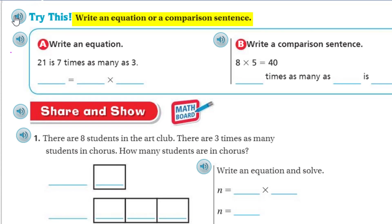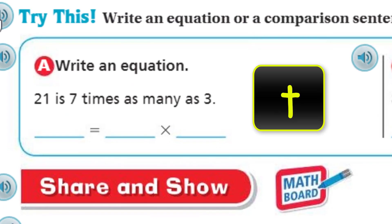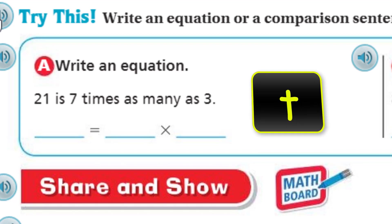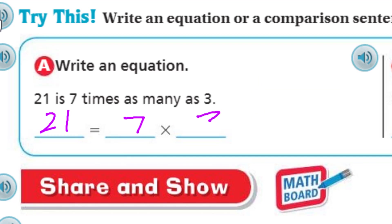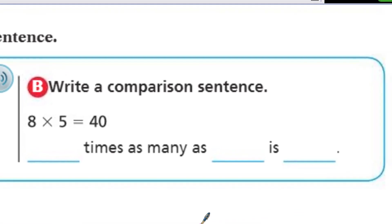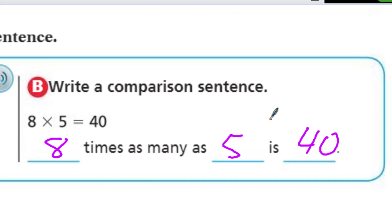Write an equation or a comparison sentence. First: '21 is seven times as many as 3' — so 21 equals 7 times 3, or 3 times 7. Next, write a comparison sentence for 8 times 5 equals 40: 'Eight times as many as 5 is 40.' The word 'is' is always translated into the equals sign, and 'times' stays as multiplication.